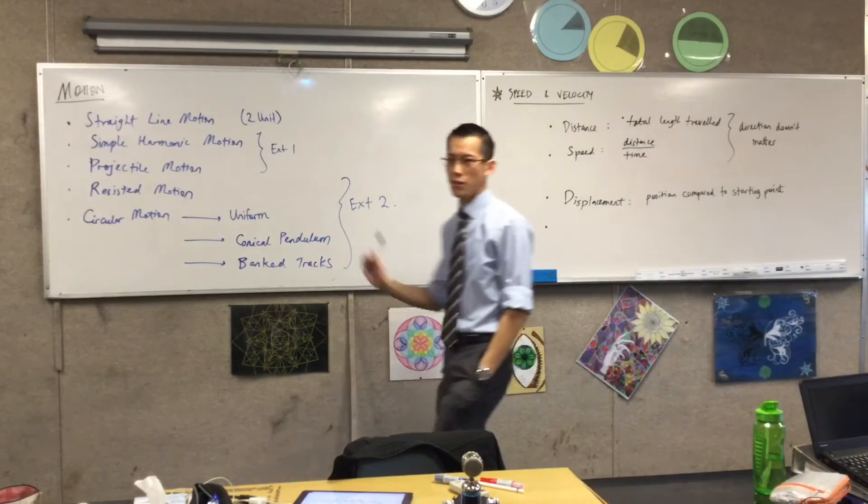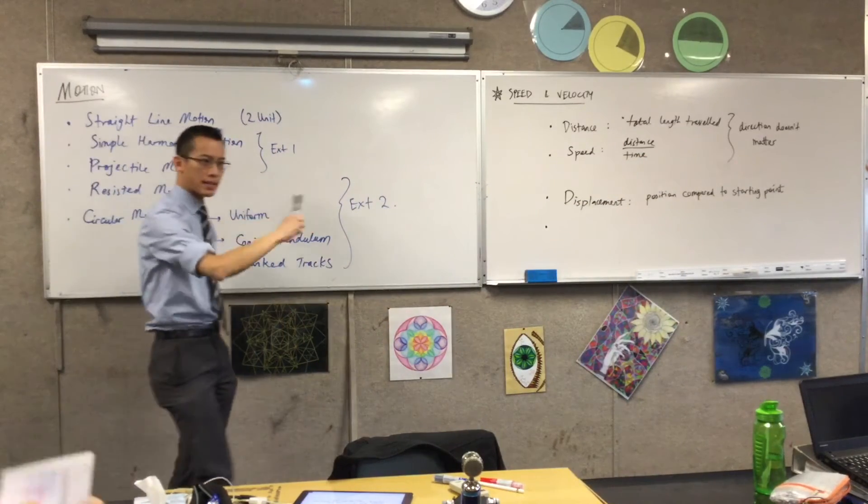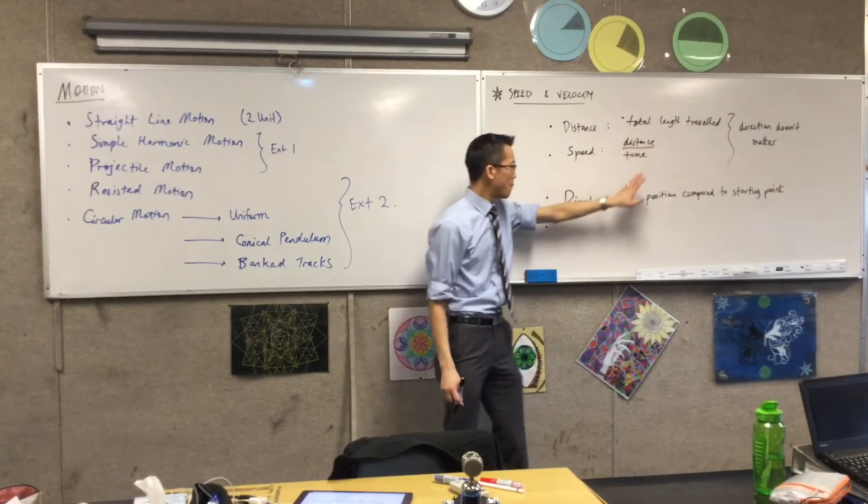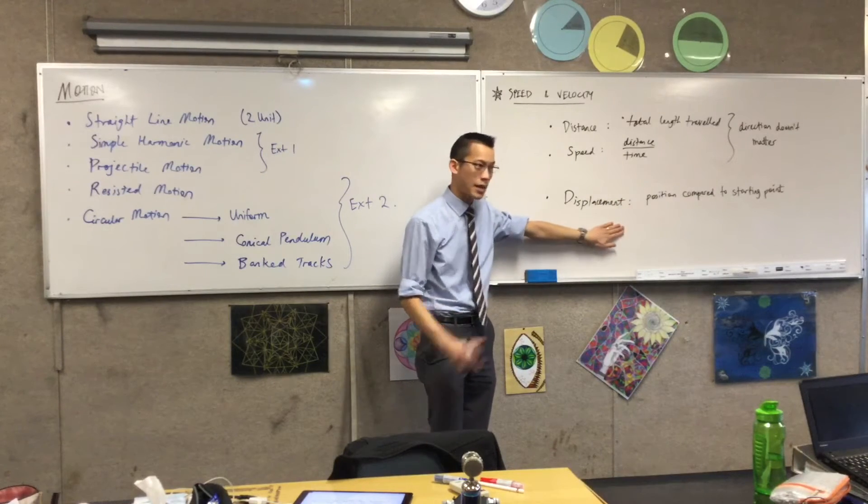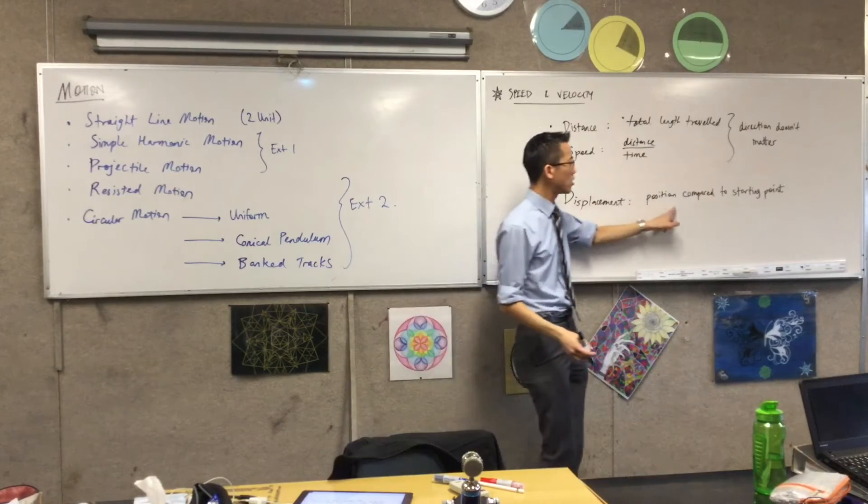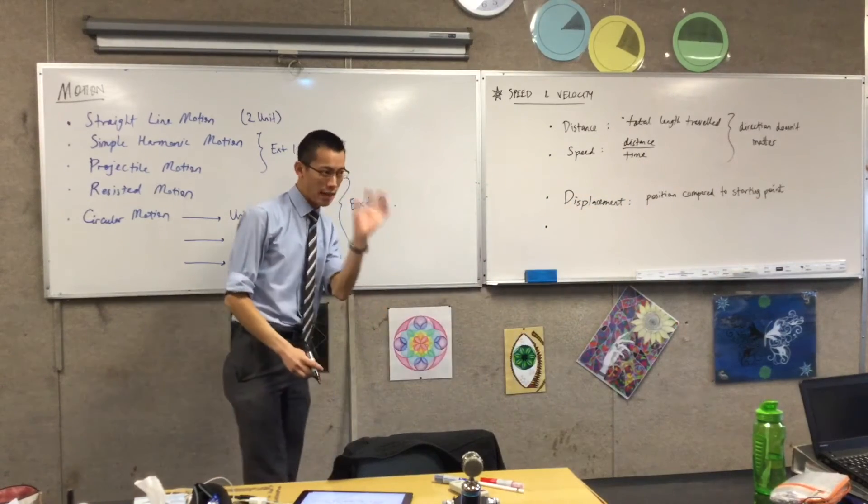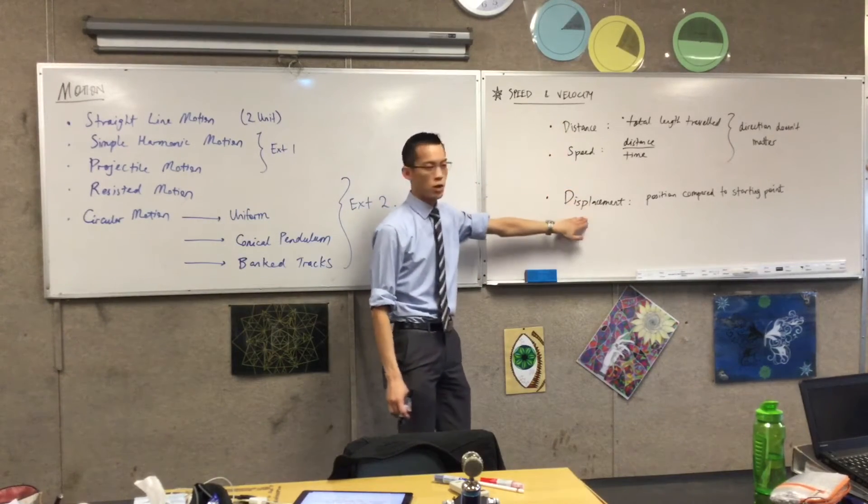Now what this means is, if you're running laps of an oval, once you complete a single lap, you have gone a certain distance. But once you've completed that lap and ended back where you started, your displacement at that instant in time is zero, because your position compared to your starting point is exactly where you started. So you currently at that point have zero displacement. You have distance, you have speed, but your displacement is zero.